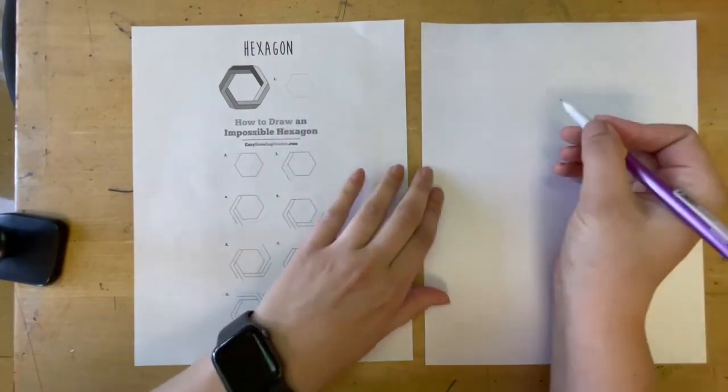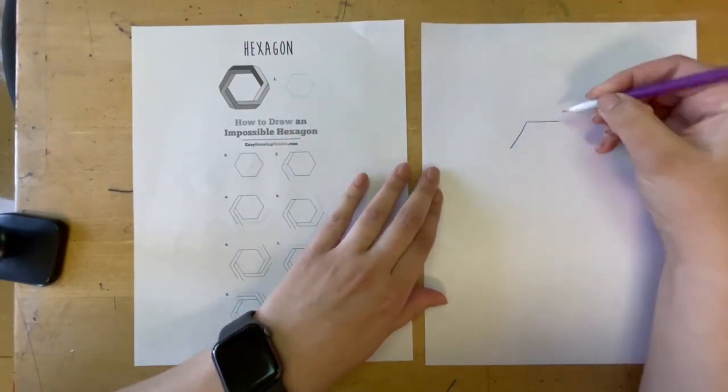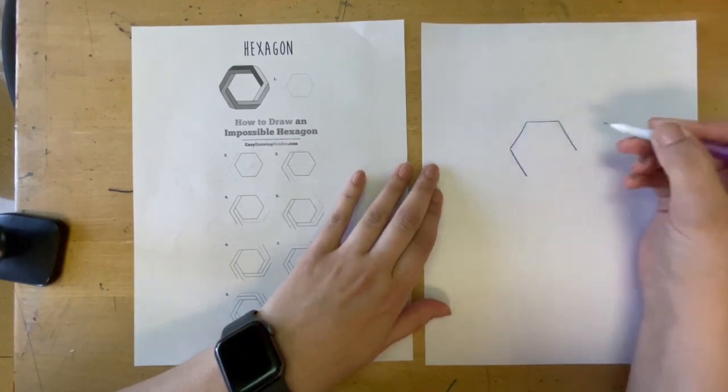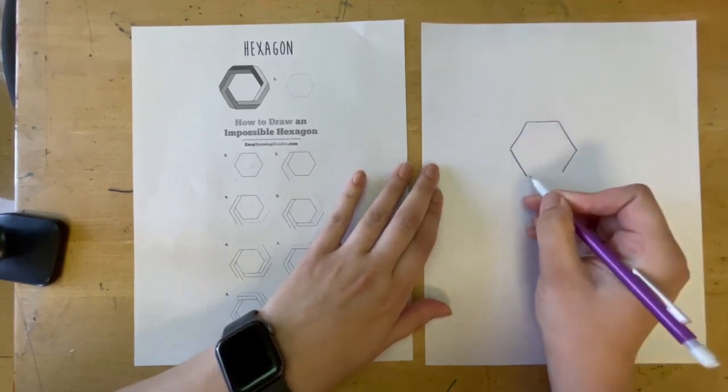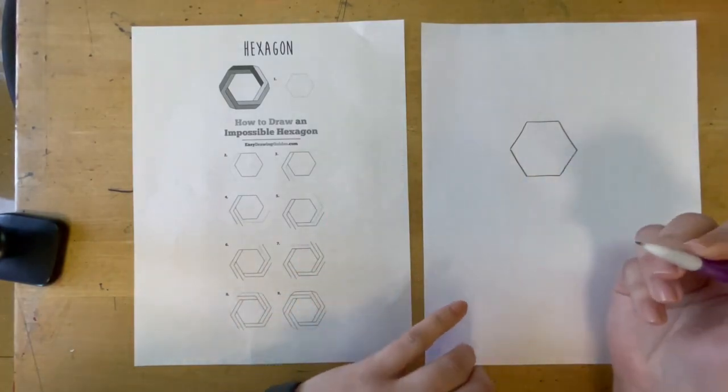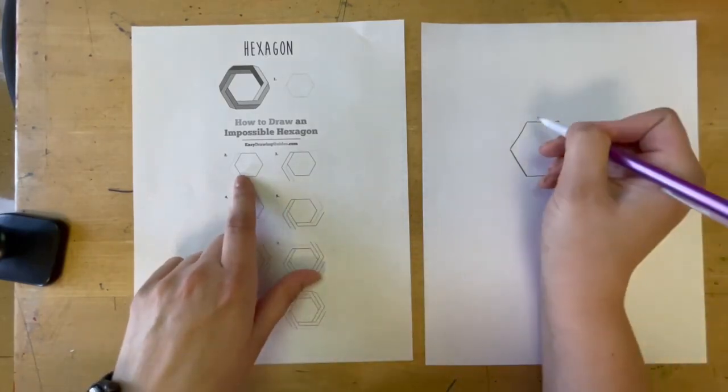Step one, we want to start with our hexagon, which is six-sided. One, two, three, four, five, and six. You can see I'm doing this freehand, too. It doesn't have to be perfect, so go ahead and try your very best.